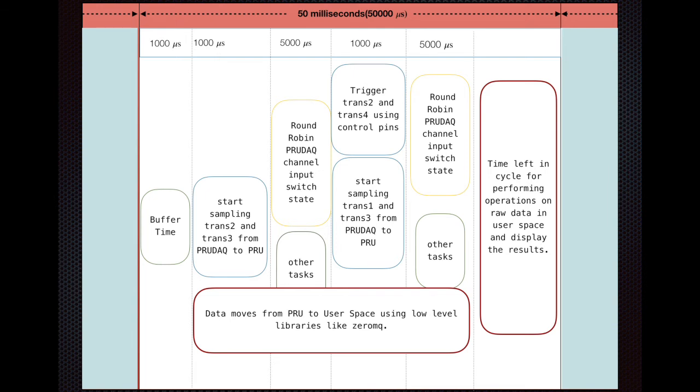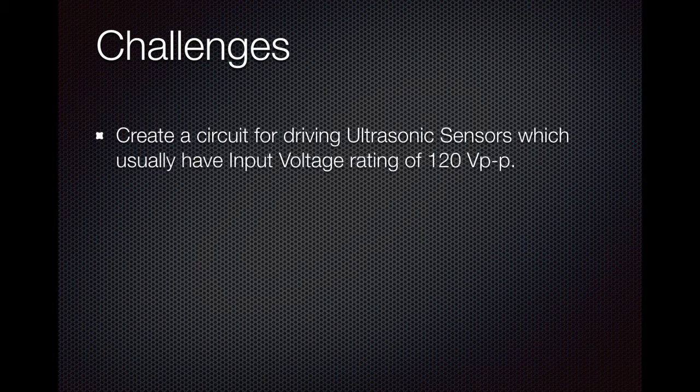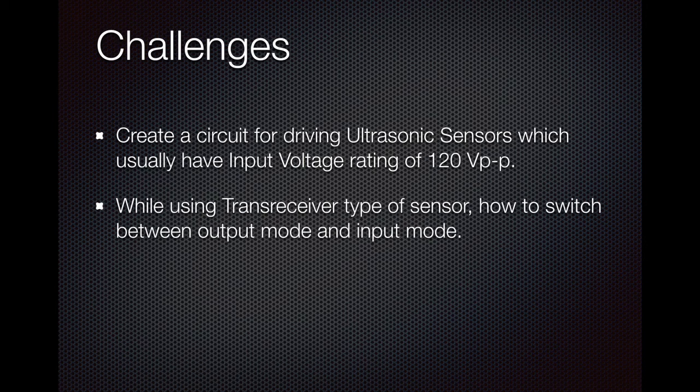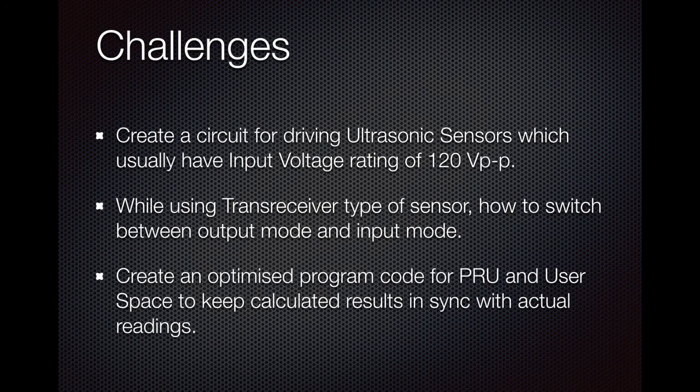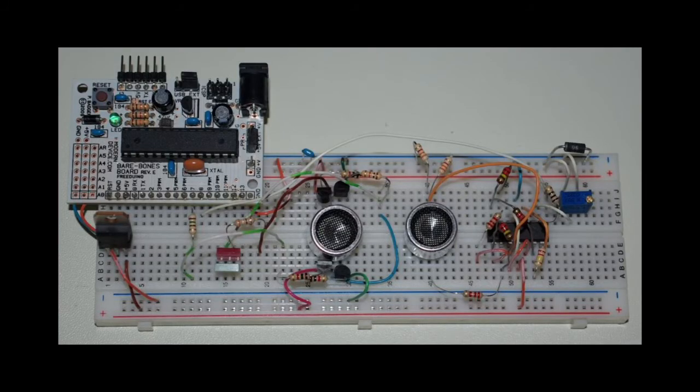Now the challenges we are facing in this project: first is to create a circuit for the sensors as they cannot be directly interfaced with BeagleBone. While using transceiver type of sensor (they can act as transmitter and receiver both), another challenge is how to connect them to trigger pin and to receiver pin. The last challenge, the main challenge, is to create and program in the kernel space of PRU so that results can be delivered in real time.